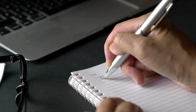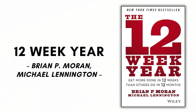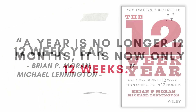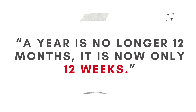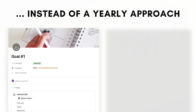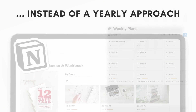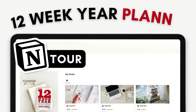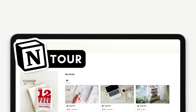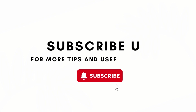Are you interested in progressing in your goals more efficiently? We highly recommend the 12-week year planning approach introduced in the book '12 Week Year' by Brian P. Moran and Michael Lennington. After reading the book, we were inspired to create a Notion template that could allow you to plan your goals in 12-week cycles instead of a yearly approach. In this video, we'll be guiding you and giving you a tour of our 12-week year planner Notion template and workbook. If you find this useful, be sure to like, subscribe, and click the notification bell. So let's dive right in!